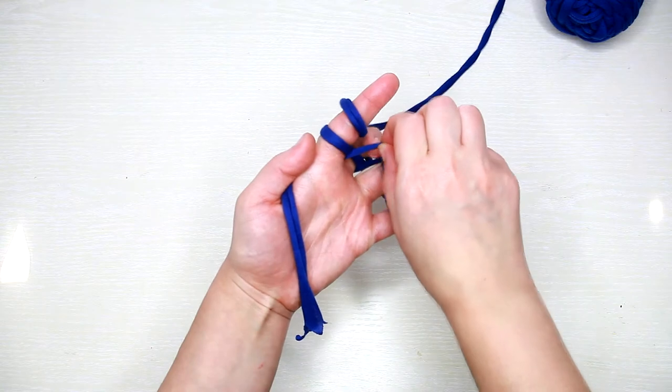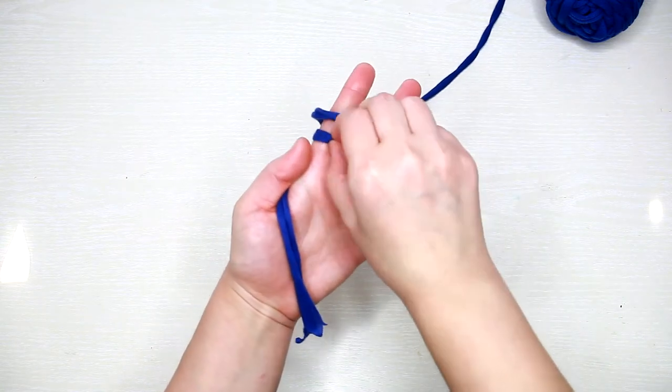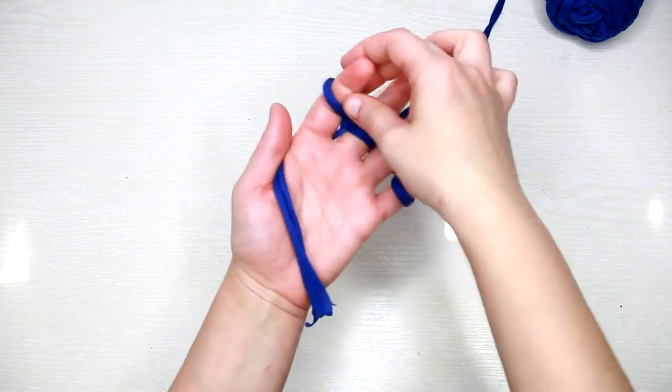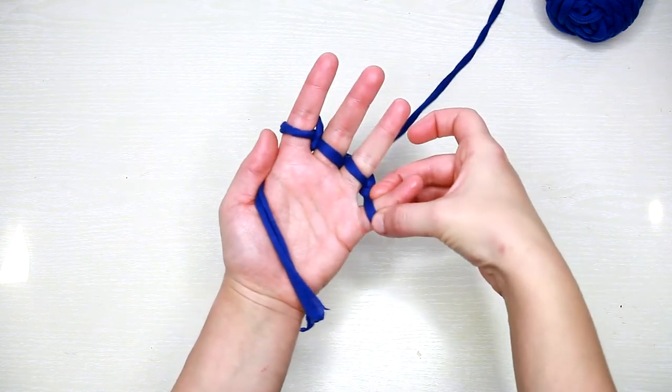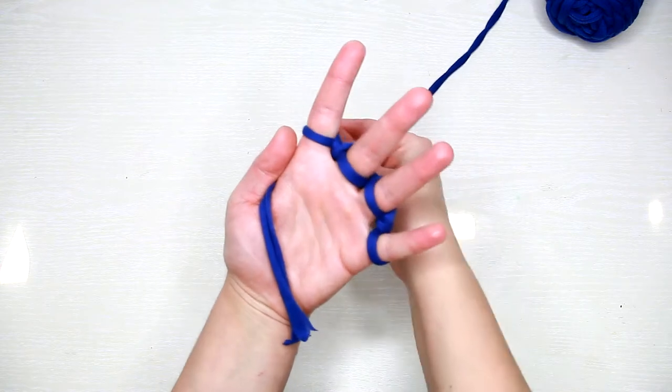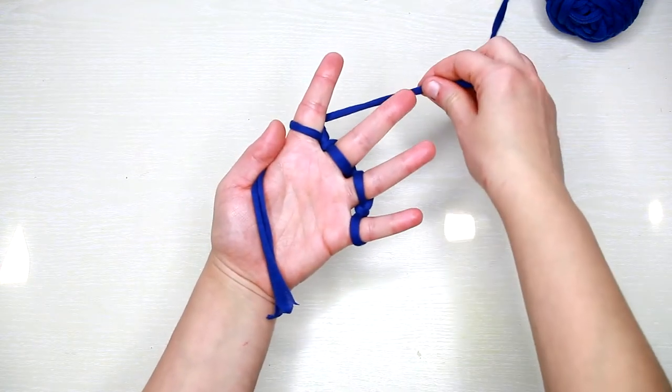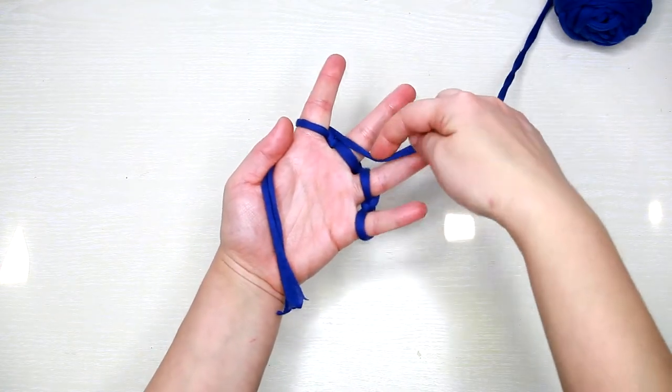Finish with the index finger and now you have your first row of stitches. Wrap your yarn around the fingers twice, always ending with the index finger.